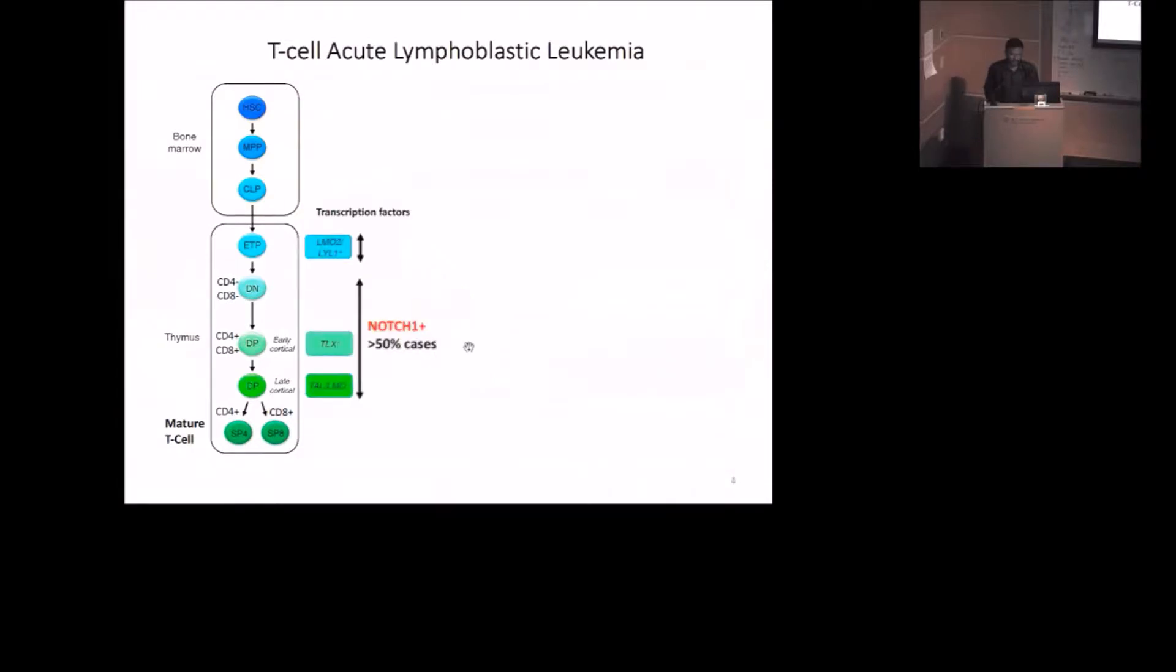So in T-ALL, several groups of transcription factors have oncogenic high expression. Often they have gain of function mutations. For example, NOTCH1 is one transcription cofactor that has gain of function mutations in more than 50% of T-ALL cases. T-ALL accounts for 25% of all acute lymphoblastic leukemia cases. Around 30 to 50% of T-ALL patients have poor or no prognosis to existing chemotherapies.